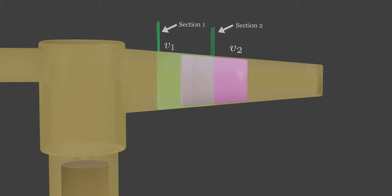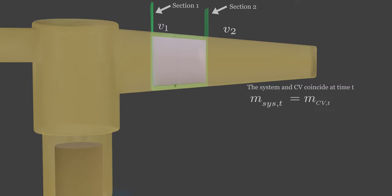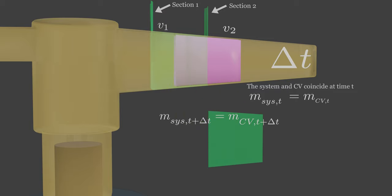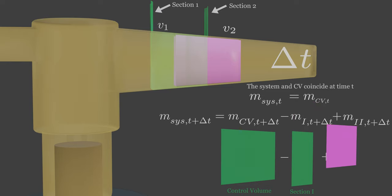I'll write, at initial time t, mass of system is equal to mass of control volume. But in little increment of time, mass of the same system is mass occupied by new and the old system within the control volume at time t plus delta t, minus mass occupied by a new system at time t plus delta t, plus total mass that leaves the control volume at time t plus delta t.